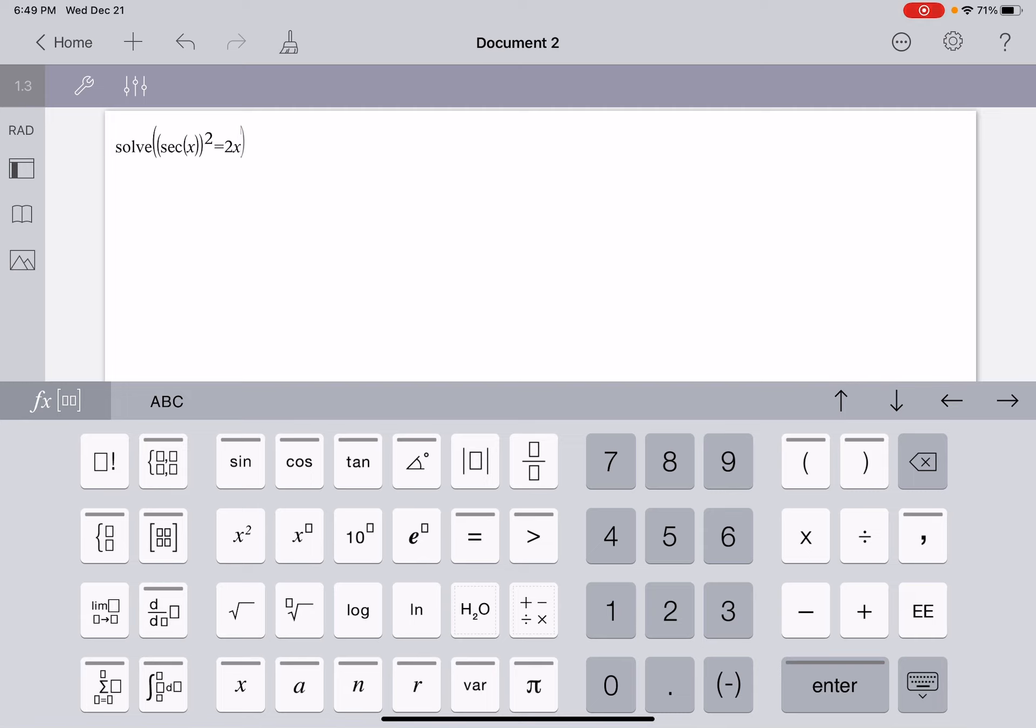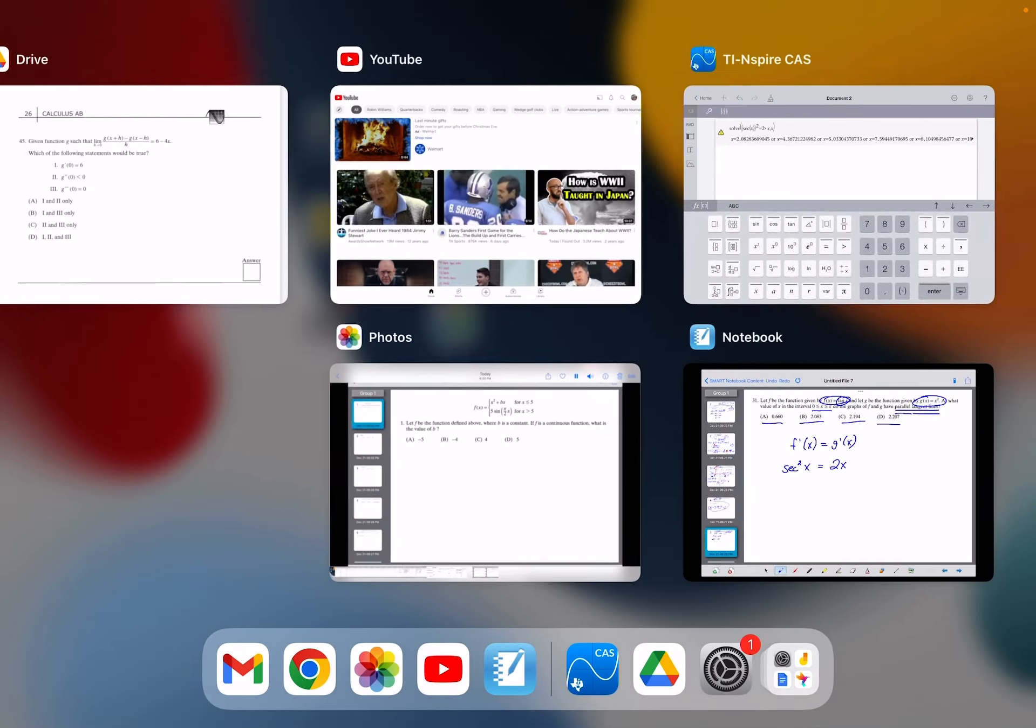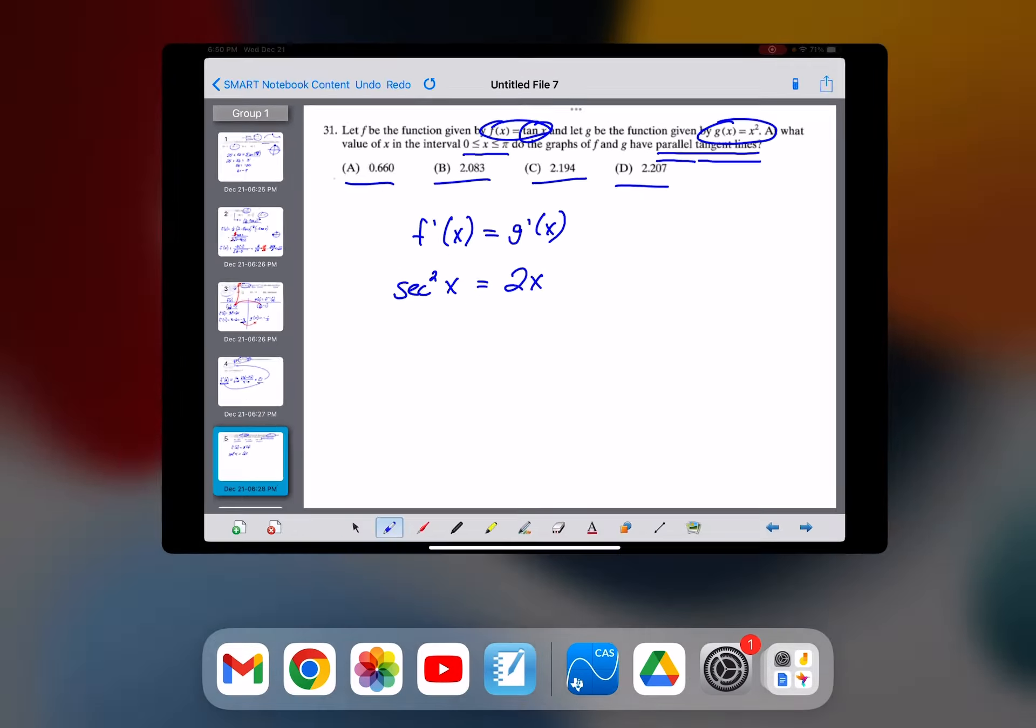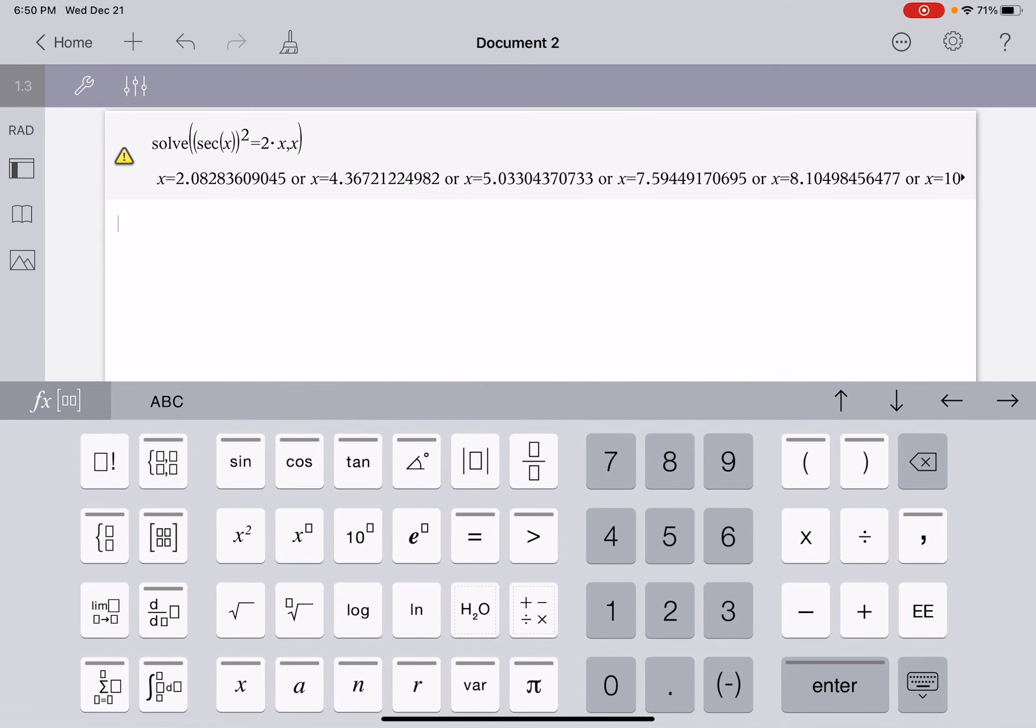If I hit comma x, this might tell me there's a whole bunch of solutions. But I got to go back and remember, they were limiting us to a given domain just on the interval between 0 and π, so 0 and 3.14. Hopefully there's only one solution there, and it looks like that first one we have would be right. So x is equal to 2.083.